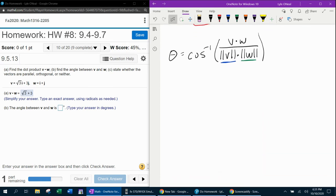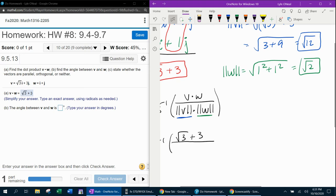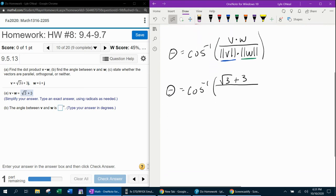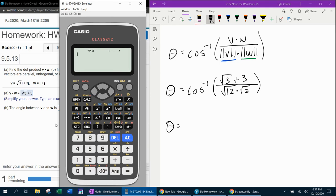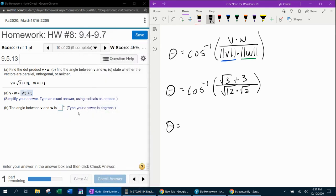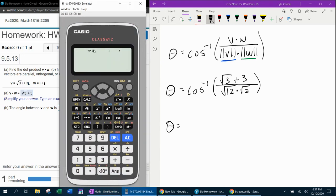Now we can find our angle theta. Theta is the inverse cosine of the dot product—which was √3 plus 3—divided by the magnitudes multiplied, so that's √12 times √2. Thank goodness for the calculator. Do I want the angle in degrees or radians? They want degrees, so I need to be in degree mode.